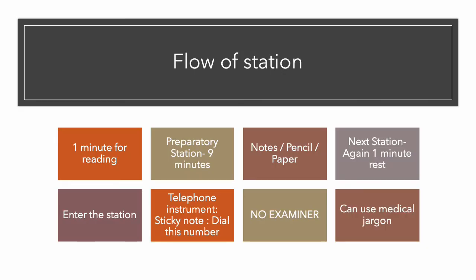The flow of this station: most likely you will be getting a preparatory station of nine minutes before your actual station. The circuit is running for everyone, so the student before this station will be given the preparatory station. You have one minute outside first to read the scenario — it will only state that you have to communicate in the next station. After one minute when the bell rings, you go into the preparation station, where you have nine minutes. Records will be provided and you'll have notes, pencil, and paper to take notes.